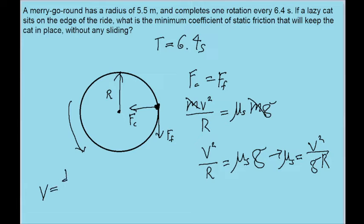We'll just use the distance over time formula for speed, because in this case, the distance that it travels in one rotation is just equal to the circumference of a circle, which is given by 2πr. And then the time it takes to rotate around that is given to us.